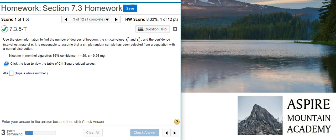Here's our problem statement. Use the given information to find the number of degrees of freedom, the critical values, and the confidence interval estimate of sigma, the population standard deviation. It is reasonable to assume that a simple random sample has been selected from a population with a normal distribution.